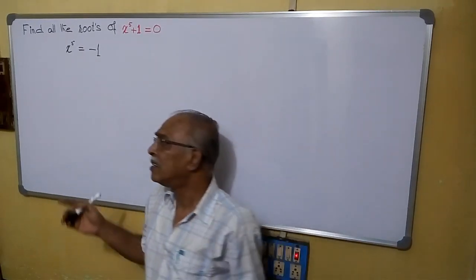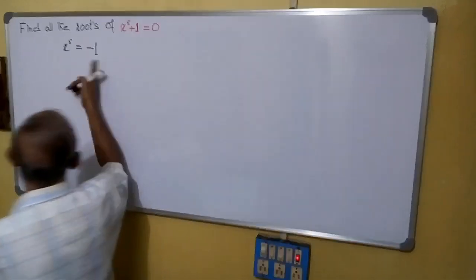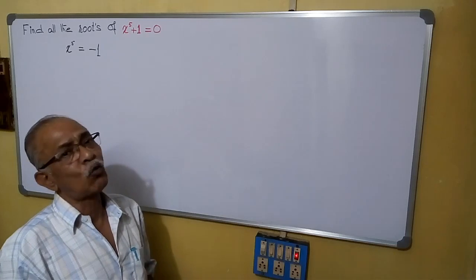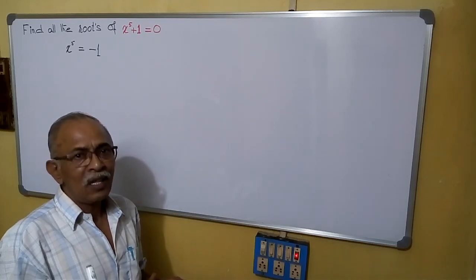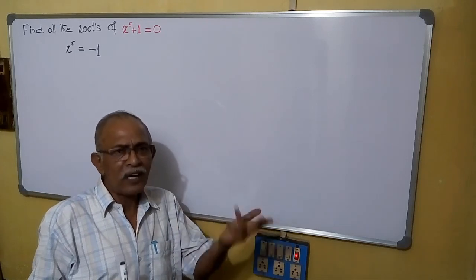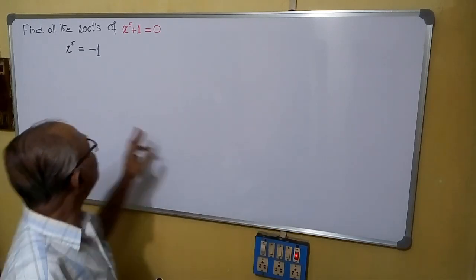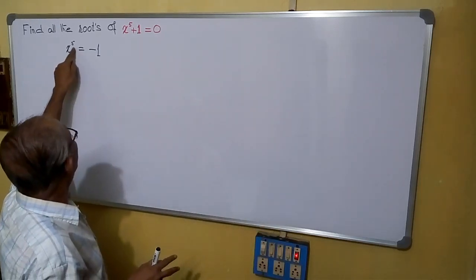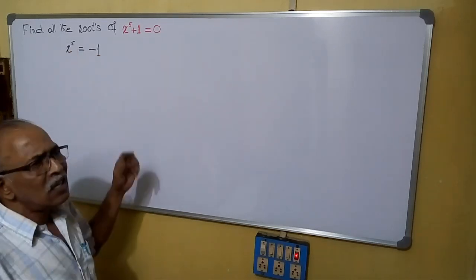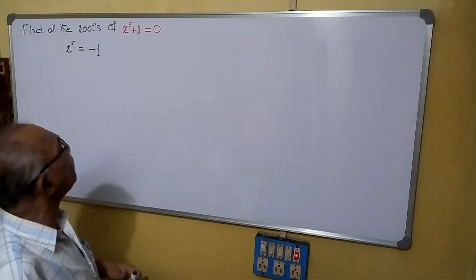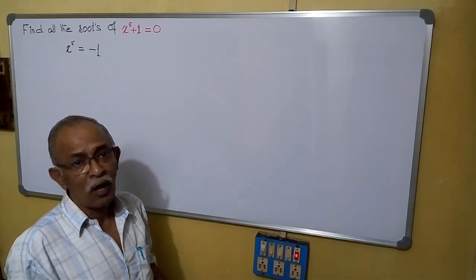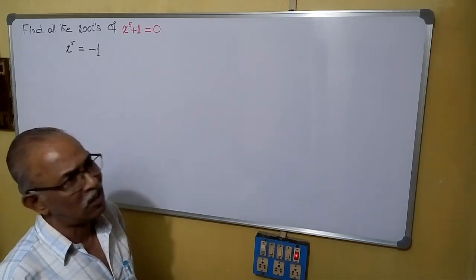That means we are getting one root from here. The remaining 4 roots should be complex quantities. Complex roots always remain in pairs, so since there will be 2 pairs, altogether 5 roots will be there. We are getting mentally that 1 root will be minus 1, meaning there will be 4 other complex roots. How to find those?